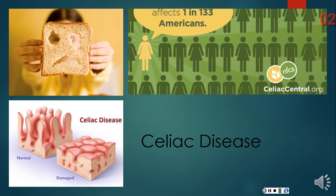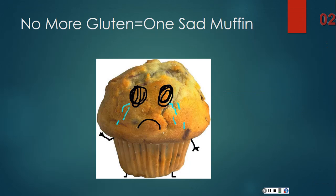In the grand scheme of things, celiac disease is very common, as about 100 people have the disease. But there are ways to remedy this disease. The main way being to stop eating gluten, which I know is very hard, especially for Jerry and his love for muffins.